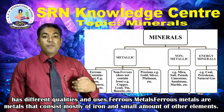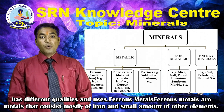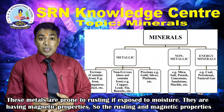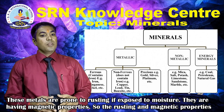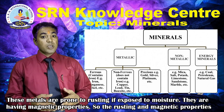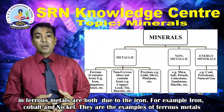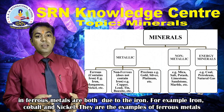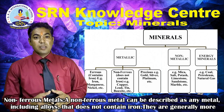Ferrous metals are metals that consist mostly of iron and a small amount of other elements. These metals are prone to rusting if exposed to moisture. They are having magnetic properties. The rusting and magnetic properties in ferrous metals are both due to iron. For example, iron, cobalt and nickel are examples of ferrous metals.